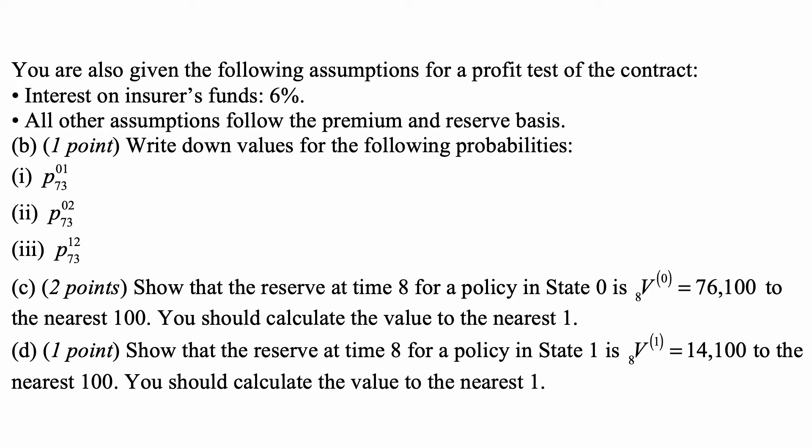Part C: Show that the reserve at time 8 for a policy in State 0 is 8V0 equal to 76,100 to the nearest 100. You should calculate the value to the nearest 1.